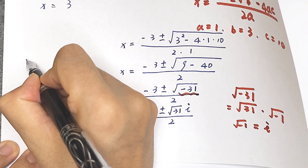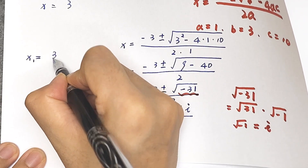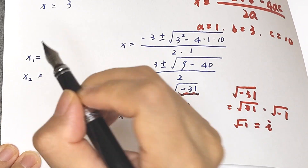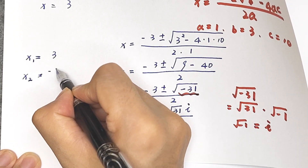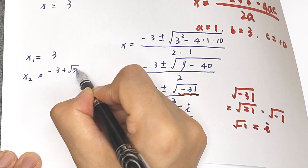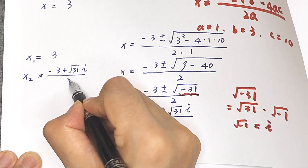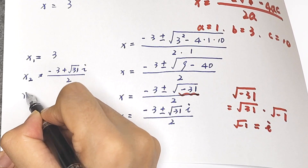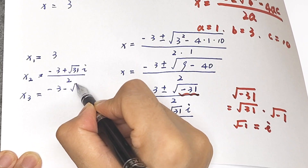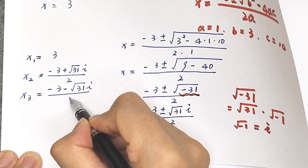So the final answers are: x equals 3, or x equals negative 3 plus square root of 31 times i, over 2, or x equals negative 3 minus square root of 31 times i, over 2.